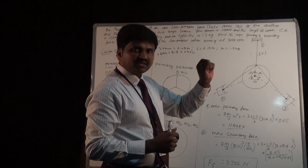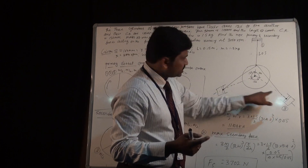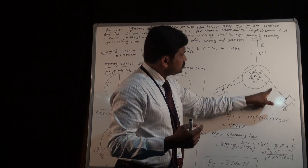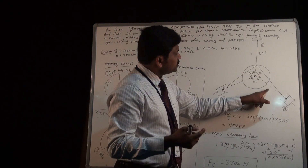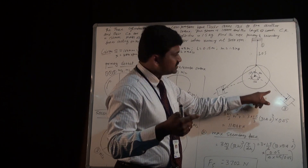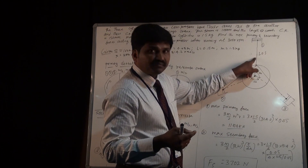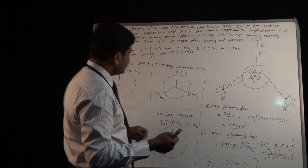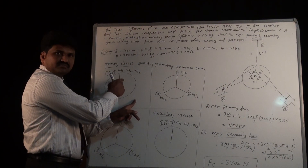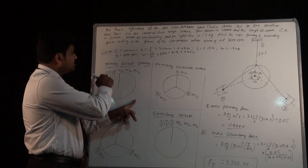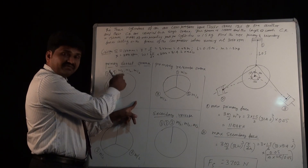For cylinder 3, the angular position of the common crank with respect to its line of stroke is 120 plus 120 equals 240 degrees, measured in the clockwise direction. So the direct crank of cylinder 3 will come to this position — 240 degrees clockwise. That means the direct cranks of all three cylinders 1, 2, and 3 will come to the same position. Half of the masses are placed at the direct crank positions.